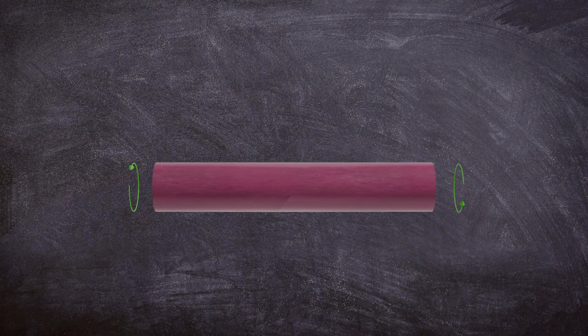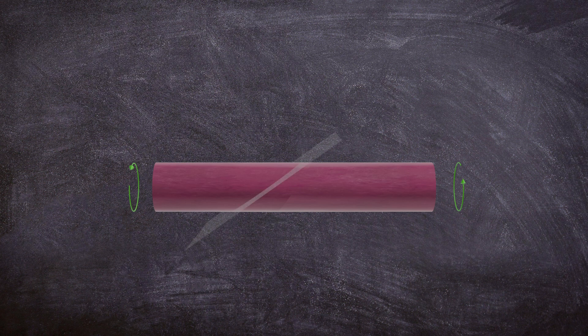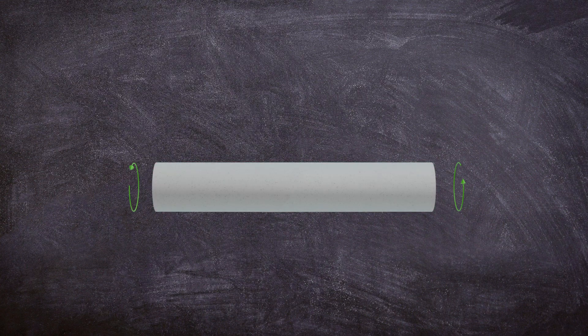Shear also prevails in torsion failures, as the material breaks along planes where shear stress is maximum. Ductile materials may exhibit twisting deformation before failure, while brittle materials can fracture suddenly, often at a 45-degree angle.